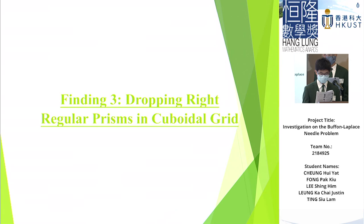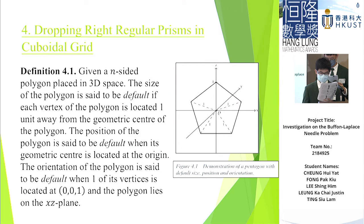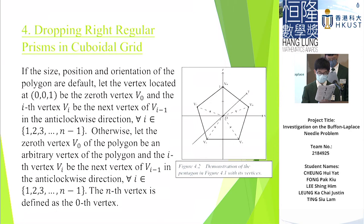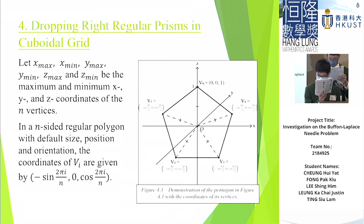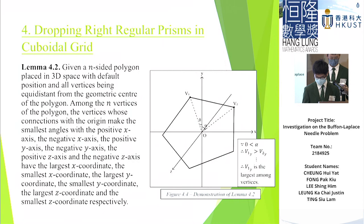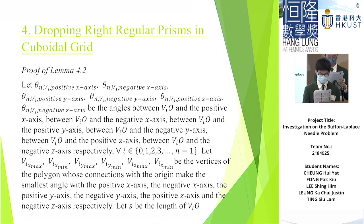And now, I'll talk about Finding 3. This is an example of a pentagon which is a default polygon. And this is Figure 4.2, a demonstration of the pentagon in Figure 4.1 with its vertices. And this is Figure 4.3, a demonstration of the pentagon in Figure 4.1 with the coordinates of vertices. And this is Lemma 4.2, which we can refer to in our paperwork. And this is another demonstration. And the proof of Lemma 4.2 is shown below.